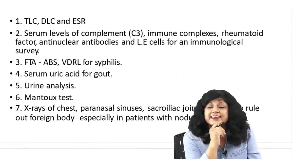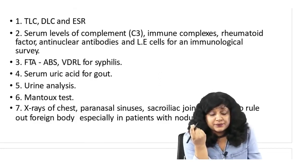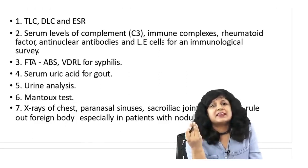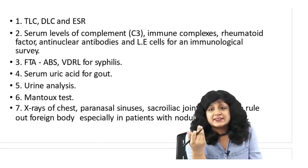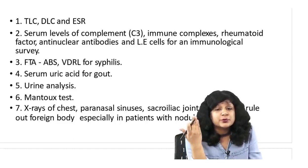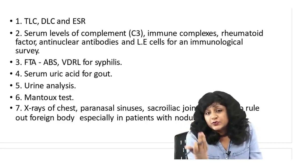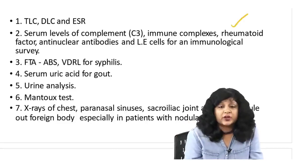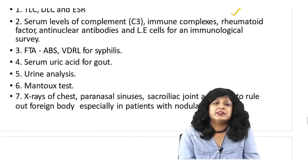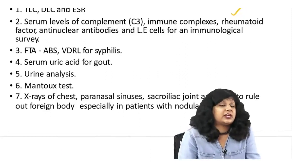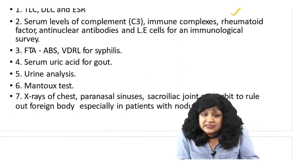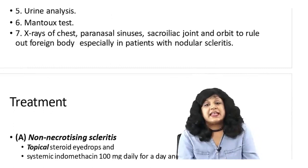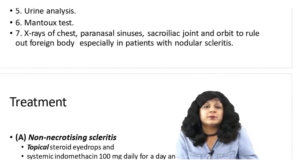These are the investigations — a long list because there is a long list of diseases associated with scleritis. Start with the basics: TLC, DLC, ESR. Then look at immunity levels since autoimmune diseases are related — rheumatoid arthritis being the commonest, so do the rheumatoid factor. Check VDRL for syphilis, check uric acid for gout, do urine analysis, check for tuberculosis and leprosy, and look at the chest X-ray for ruling out several conditions.